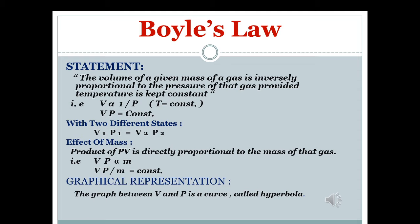If you want to write this equation for two different states: P1V1 is the first state and P2V2 is the second state. For both states temperature is constant, so P1V1 is constant and P2V2 is constant. Generally we can say PV equals constant. If you want to see the effect of mass on Boyle's law, it is directly proportional to the mass.